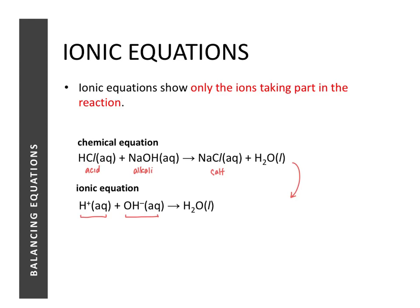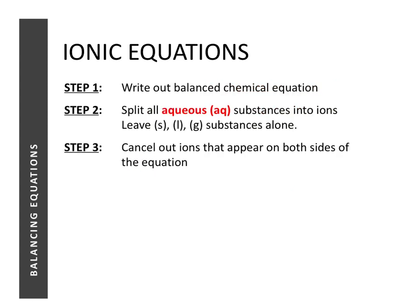Here are the steps to reduce a chemical equation to its ionic equation. Step one: write out the balanced chemical equation if it is not already given. Step two: in the chemical equation, look out for all substances that are in the aqueous state. We focus on those that are aqueous and are going to split them into their respective ions.